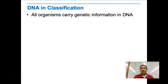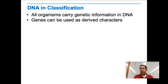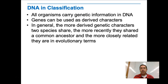All organisms carry genetic information in the form of DNA, so we can use genes as derived characters. There are common genes among different organisms because they all need these common proteins, so we can look at how the gene for hemoglobin, for example, differs in humans versus chickens versus amphibians. In general, the more derived characters two species share, the more recently they shared a common ancestor and the more closely related they are evolutionarily.